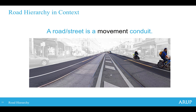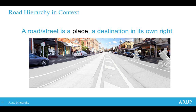We can think of a road or a street in two ways. The first is as a movement conduit — the purpose is to get people and different modes of transport from A to B, which has probably been primarily the feature of what a road or street is in the past. There's also the consideration that streets can be a place and a destination in their own right, with things that draw people there and not just as a way to access from A to B.